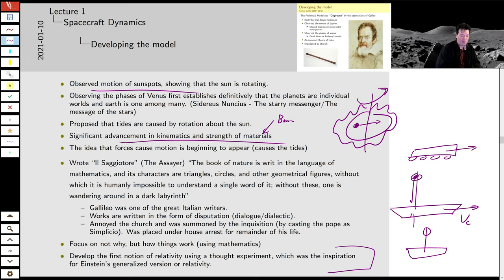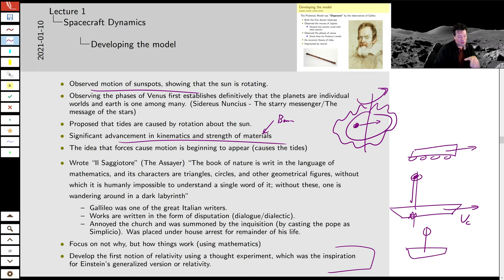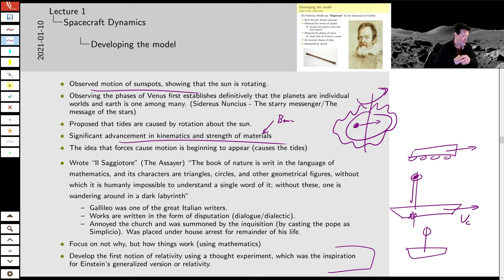Galileo never actually performed the ship experiment — if you drop a lead ball off the mast it might go through the ship. Another thing to know about Galileo is that he was a great writer. His language really solidified the Italian language to some extent and he's still studied as one of the great Italian writers. His writing proposing the idea of relativity is in the form of dialogue — all scientific work in the late Middle Ages was written as dialogues, the same way Plato's works were: people talking to each other, having a disputation between two sides.